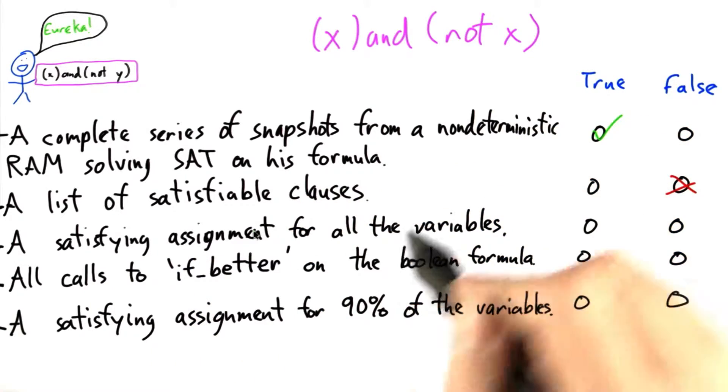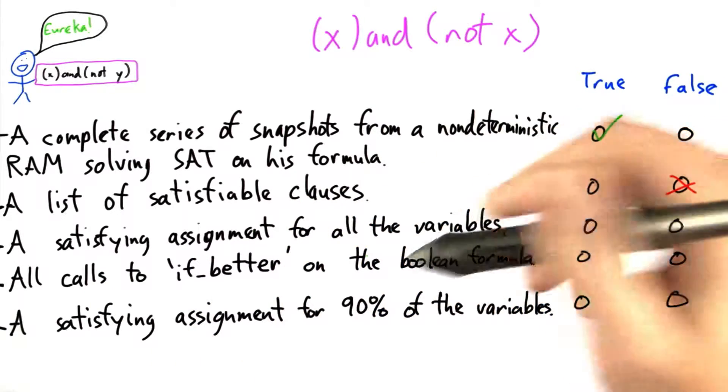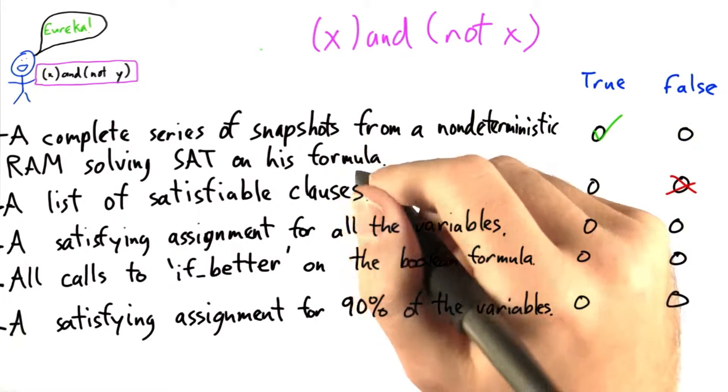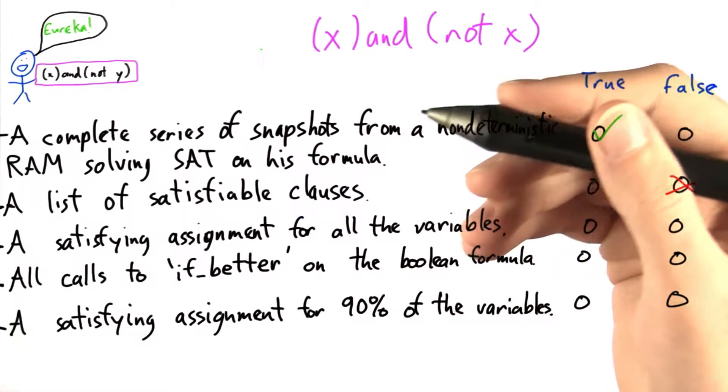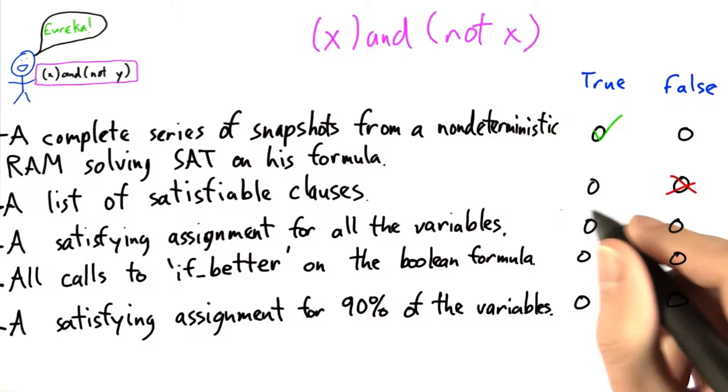Now, if we had a satisfying assignment for all of the variables in the formula, then sure, we can just plug them into the formula and check on a deterministic RAM, and that occurs in polynomial time.